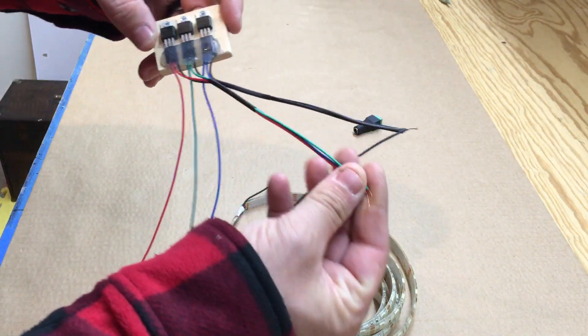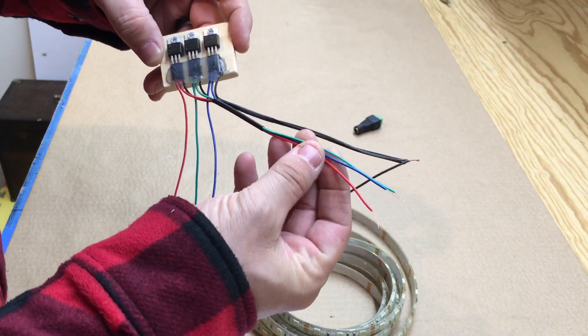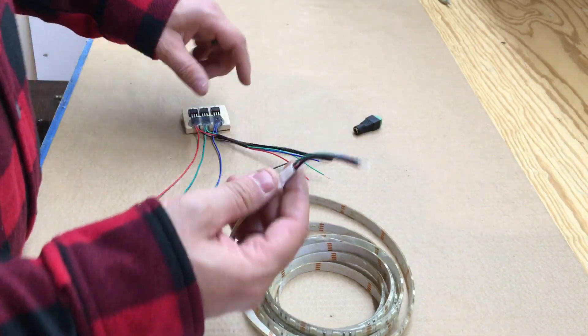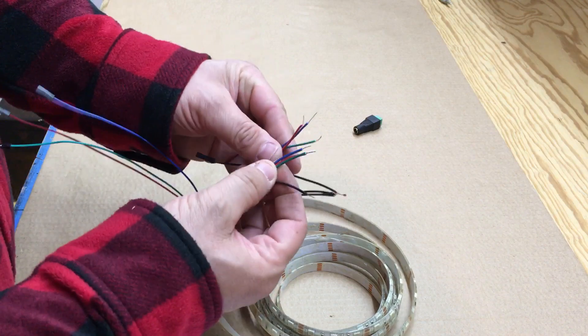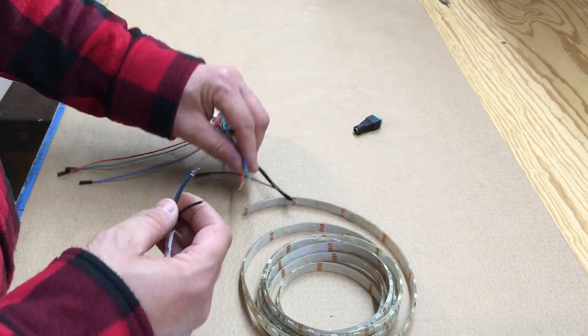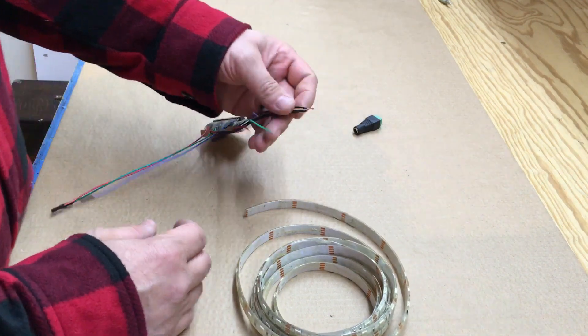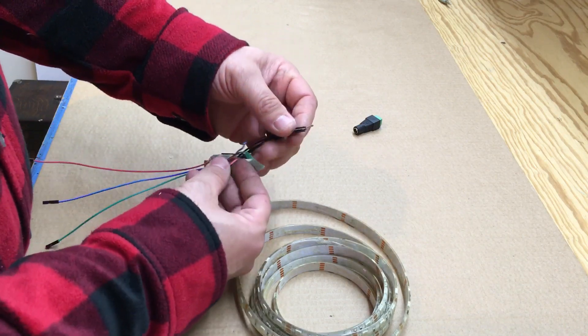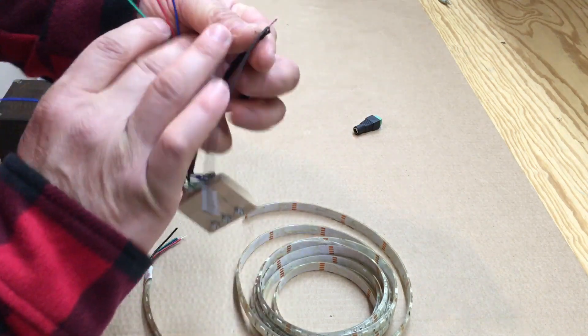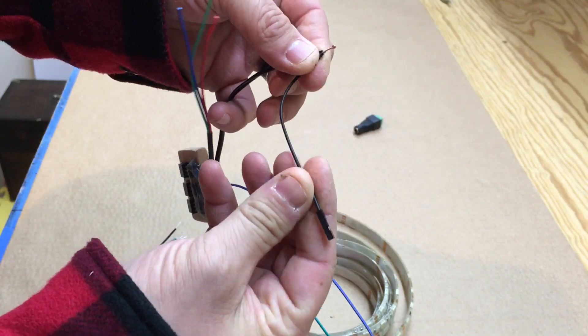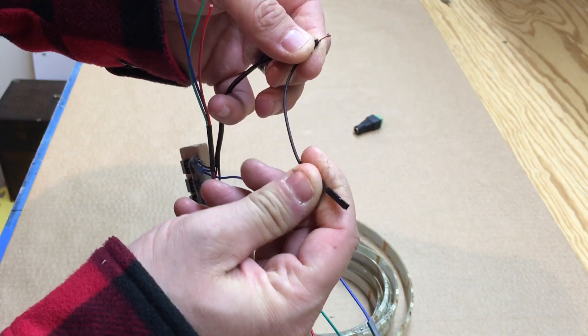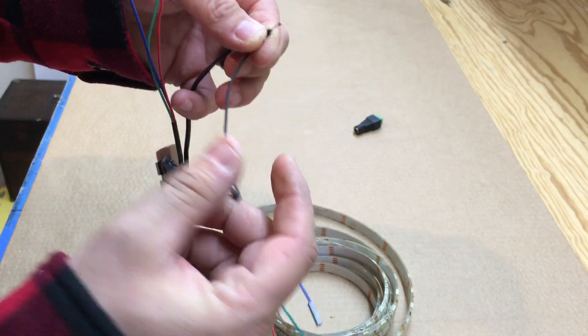Then with me using red, blue, green, we just need to hook red, blue, green to this and put them together. Then this is our ground. Then we're just going to come off of it also with a jumper going to the Pi for ground.